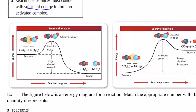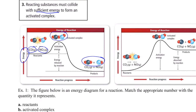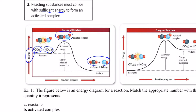Let me show you a couple of scenarios with energy diagrams. This one is carbon monoxide reacting with nitrogen dioxide. If they hit each other in the proper orientation with sufficient energy, they form the activated complex for just a moment and then form products. The y-axis is energy — the reactants have a certain amount of energy stored in their bonds. To form the activated complex, we need to add energy, which is called the activation energy.